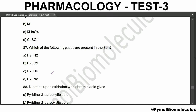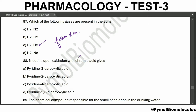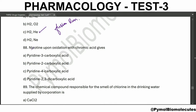The compound used in the breath analysis test for drunk driving is potassium dichromate. The gases present in the sun are hydrogen and helium - fusion reactions take place in the sun. Nicotine upon oxidation with chromic acid gives a pyridine-3-carboxylic acid - that is nicotinic acid.